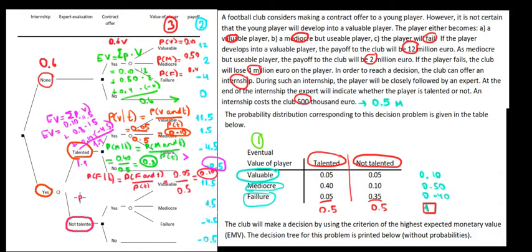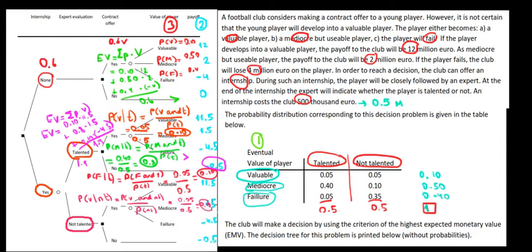The probability of being a valuable player given that he is not talented equals the probability of being valuable and not talented divided by the probability of not being talented. That's 0.05 divided by 0.5, which gives us a probability of 0.10.